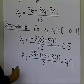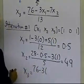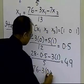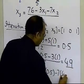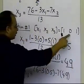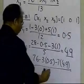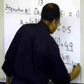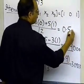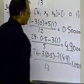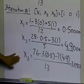Now we calculate x3: 76 minus 3 times x1 (which is 0.5, the most recent value) minus 7 times x2 (which is 4.9, the most recent value), divided by 13. This number turns out to be 3.0923. I'm using five significant digits. This becomes the solution at the end of the first iteration.